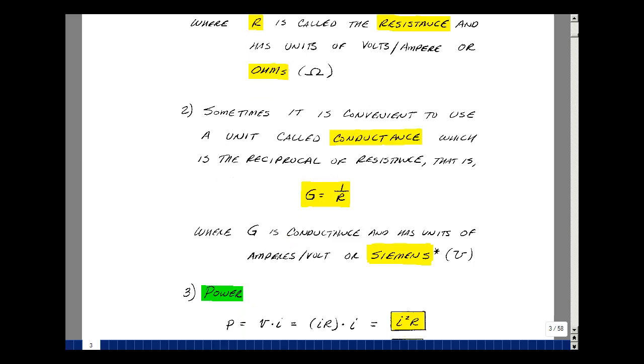Again, the units here would be the reciprocal of what we had before, which is amps per volt. And this was renamed for a German inventor whose name was Ernst Werner von Siemens. He was also the founder of the Siemens Corporation, which is a very large electrical and telecommunications company in Europe.